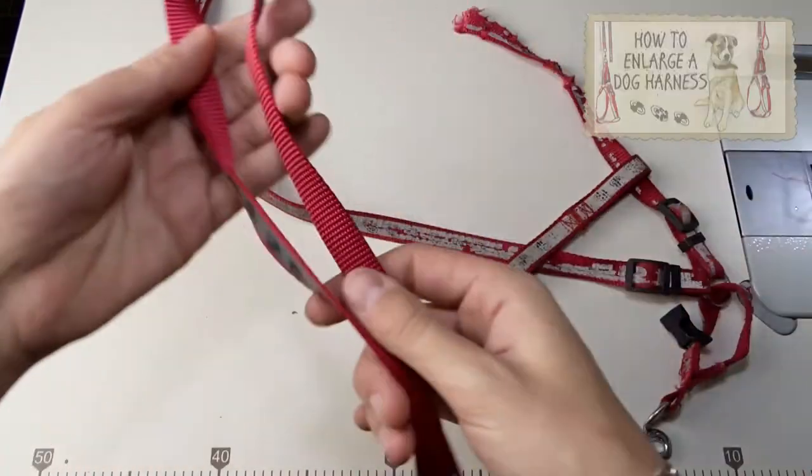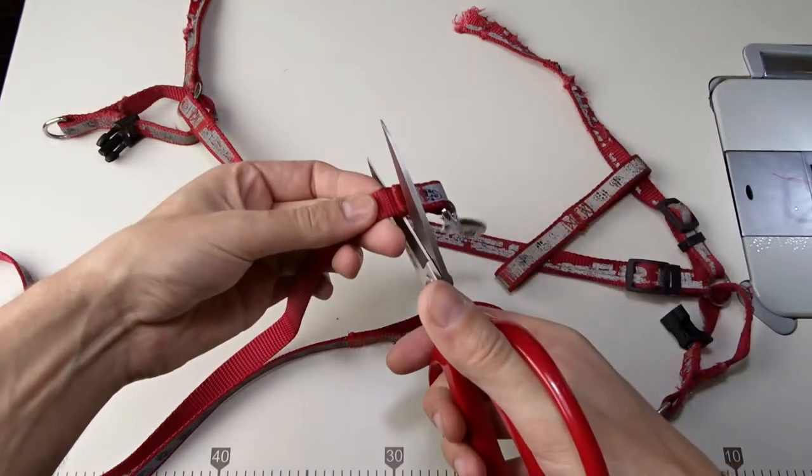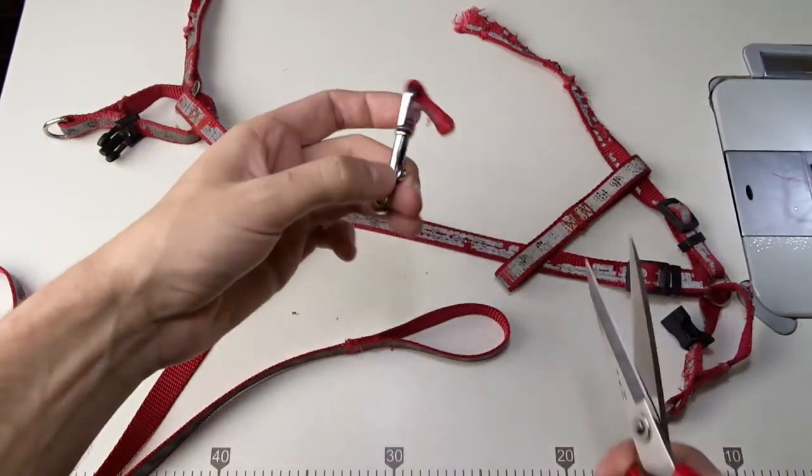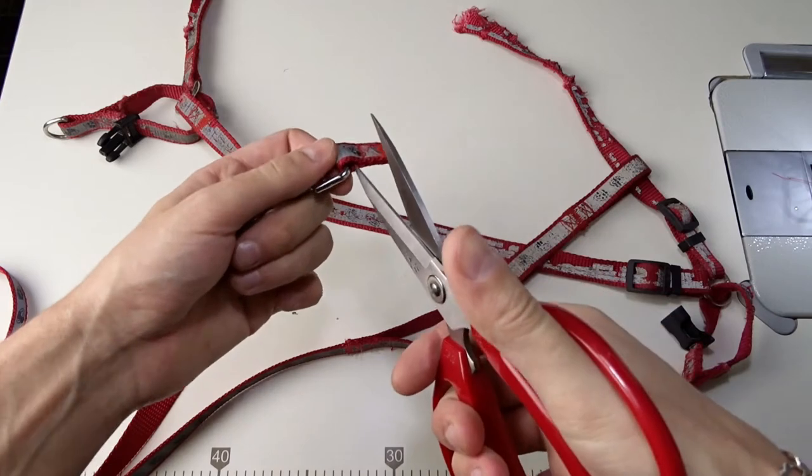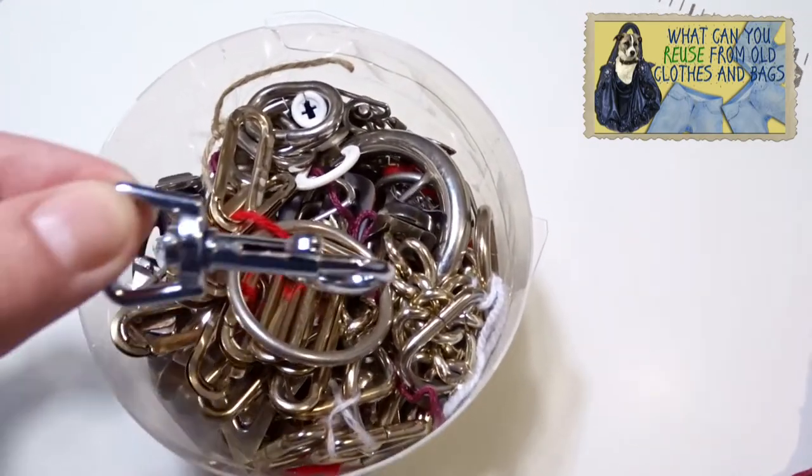I will use the dog leash from which I cut a piece in the previous video. I will keep the hook in my box with other metal things.